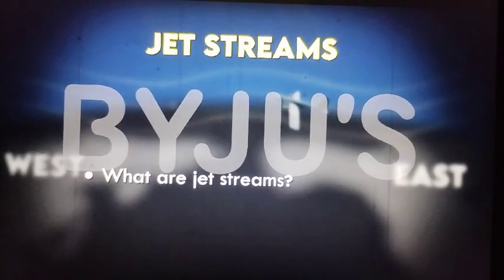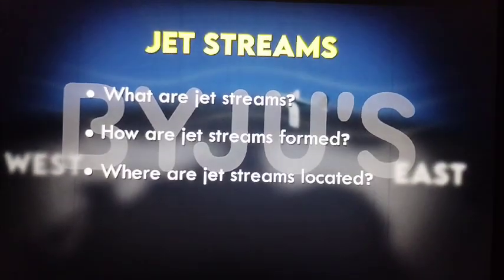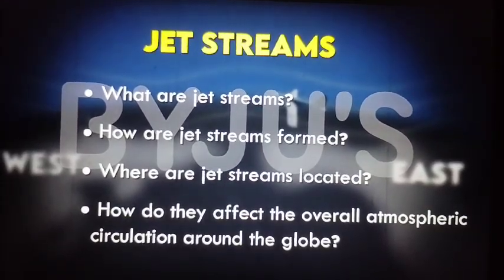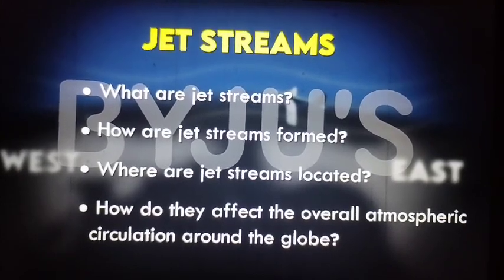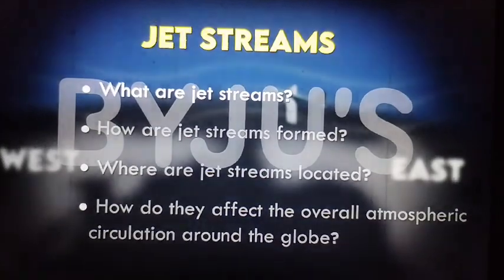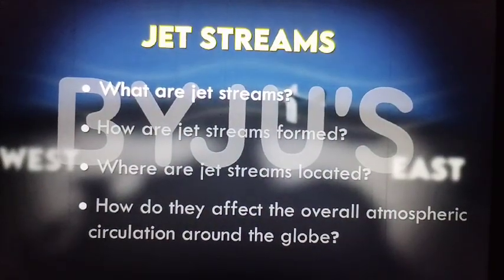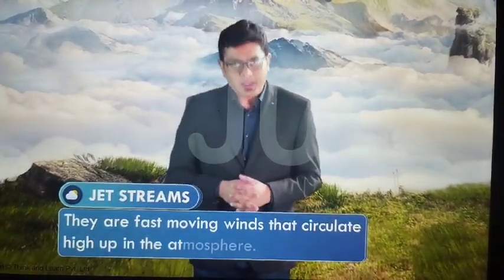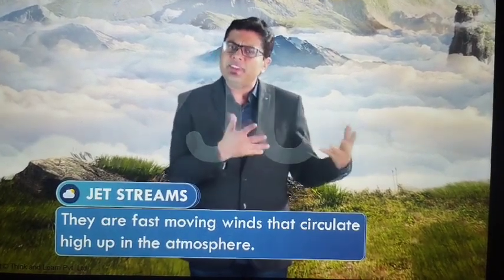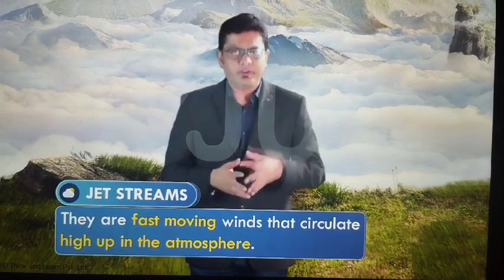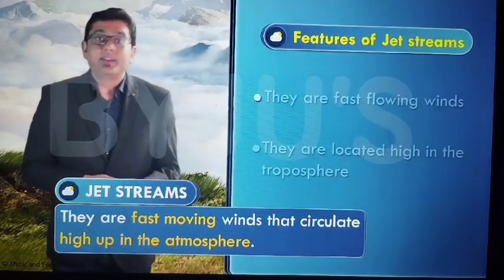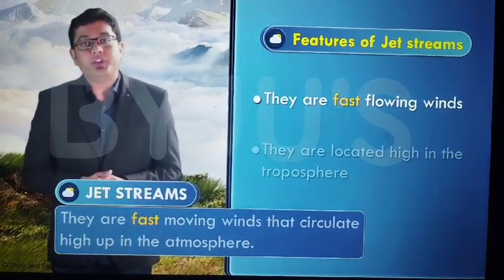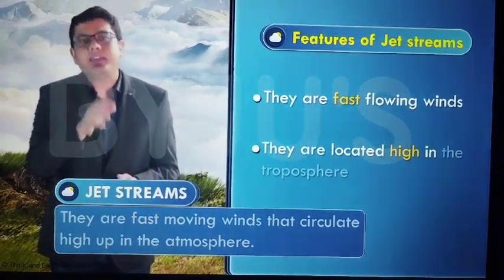So, what are these jet streams? How are they formed? Where are they located? And how do they affect the overall atmospheric circulation around the whole globe? Let's start by defining what a jet stream is. Jet streams are fast-moving winds that circulate high up in the atmosphere. From this definition, we get two pieces of information: one is that these are fast-flowing winds, and the other is that they are located high in the atmosphere.